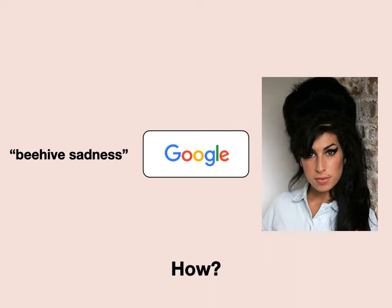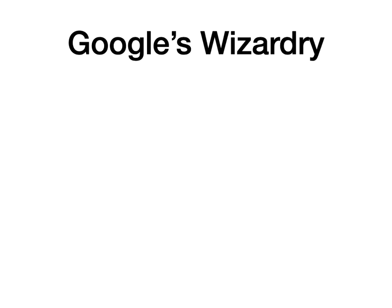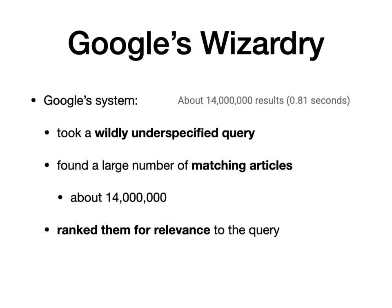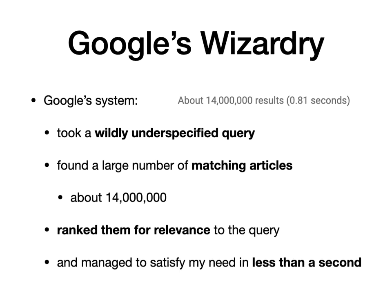Google has a lot of wizardry going on. In less than a second it found 14 million results for this super underspecified query, found a ton of matching articles, ranked them for relevance, and somehow managed to pop it up on my screen in less than a second. Google is not doing anything totally magical — it's just a system that is pulling in and chopping up information in a way to make it the most searchable so that its users can make sense of it.